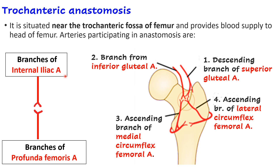This anastomosis is between branches of the internal iliac artery and branches of the profunda femoris artery. From above, the branches from the internal iliac artery are: the descending branch of the superior gluteal artery and a branch from the inferior gluteal artery — both gluteal arteries being branches of the internal iliac artery.